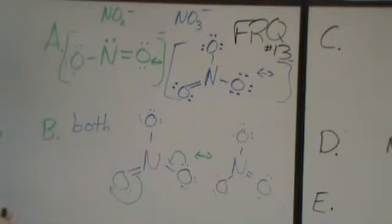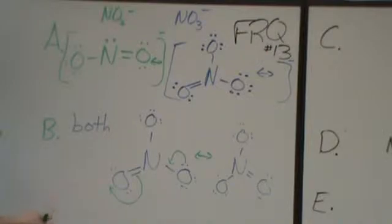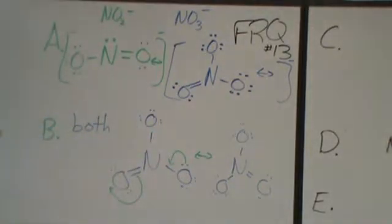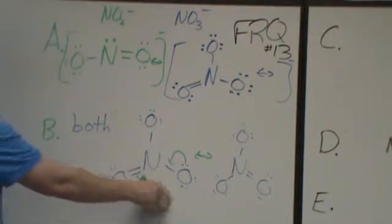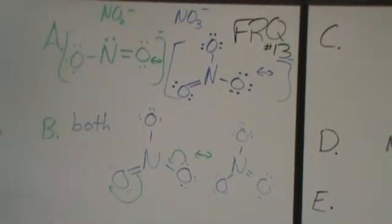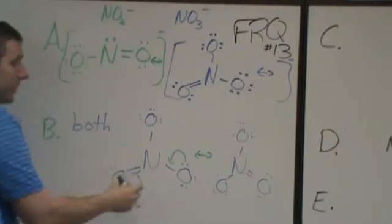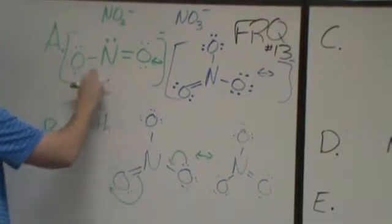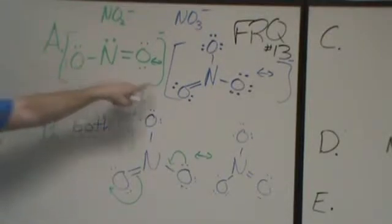You need a certain connectivity, the right elements, and to be constrained by the octet rule for resonance to occur. In terms of bond length, each N–O bond in nitrate has one-third single bond and two-thirds double bond character. For nitrite, the bonds are split more evenly between single and double bond character, giving more double bond character overall — so nitrite actually has shorter bonds than nitrate.